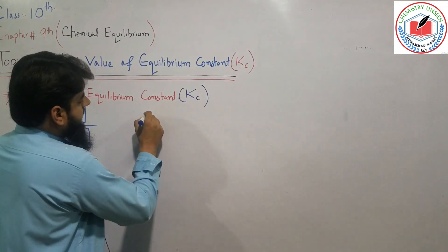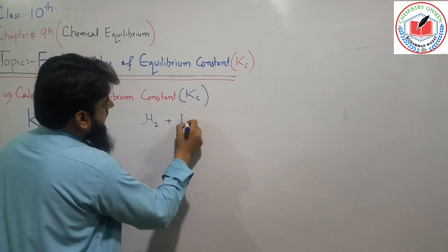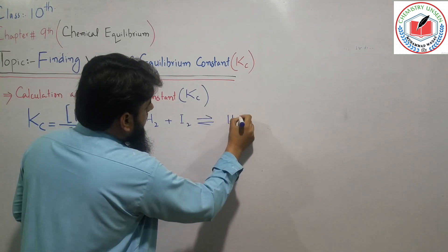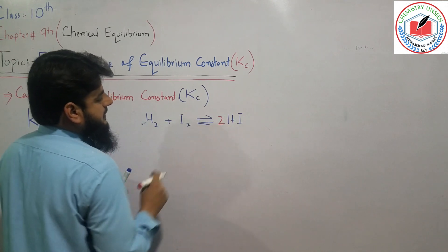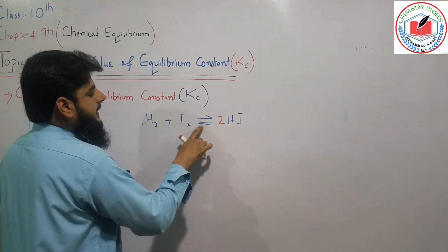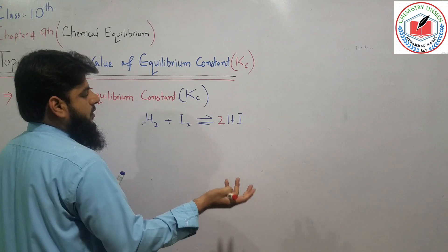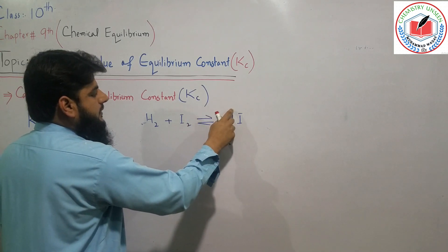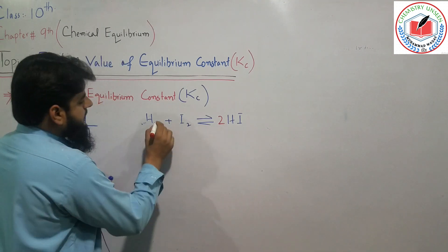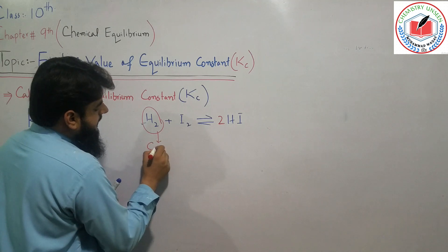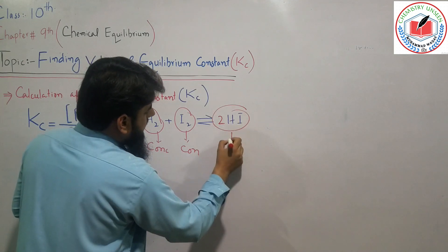For example, hydrogen is combined with iodine to produce hydrogen iodide. The balance is based on the equation. The concentration is constant at equilibrium. The rate of the forward reaction is constant, and the concentration of each species is constant.